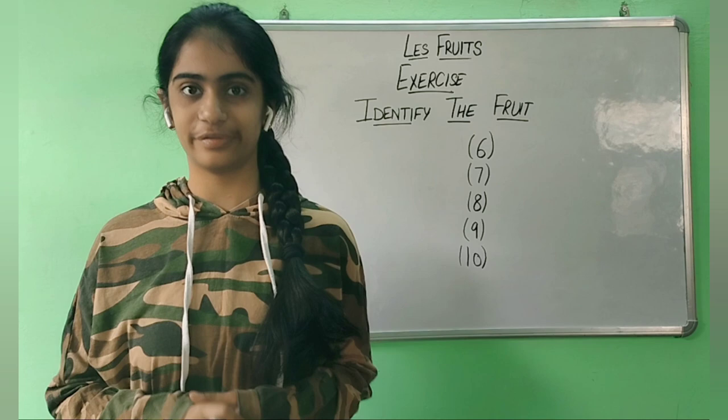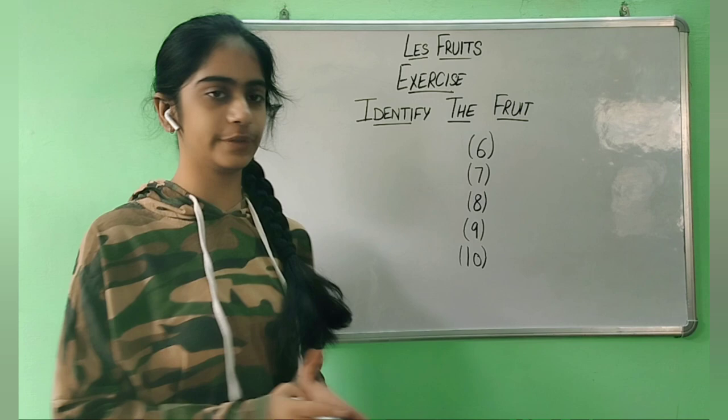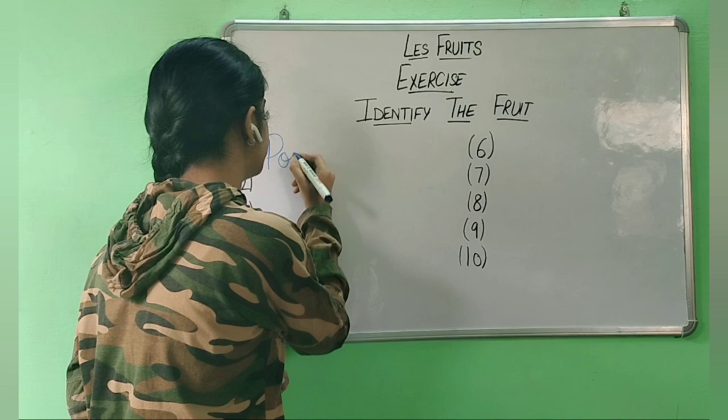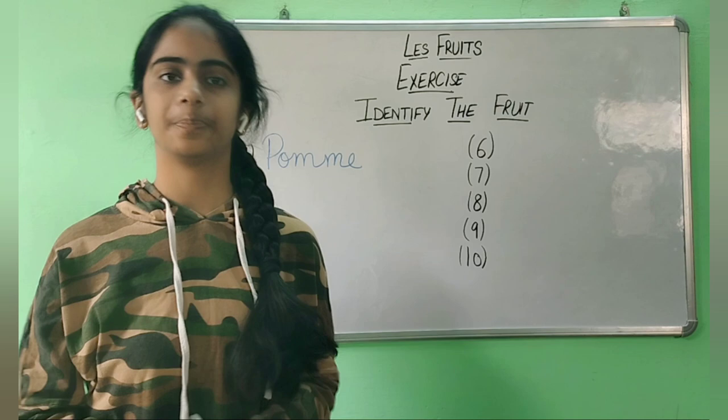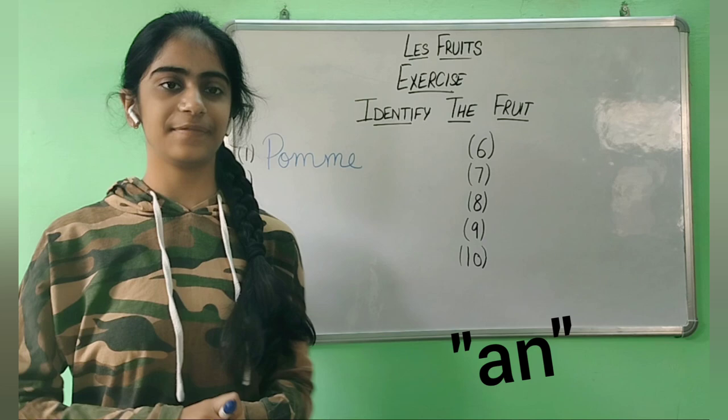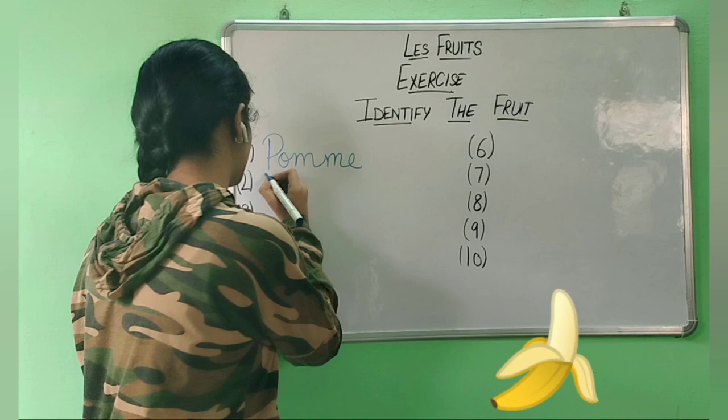So now that we have learned some basic fruits in French, let's do this exercise. Here we are to identify the fruit which is visible. What is this? Yes, it's the apple, which is pomme — la pomme. You can use any article here, for example, un pomme and la pomme — 'the apple' and 'an apple'.